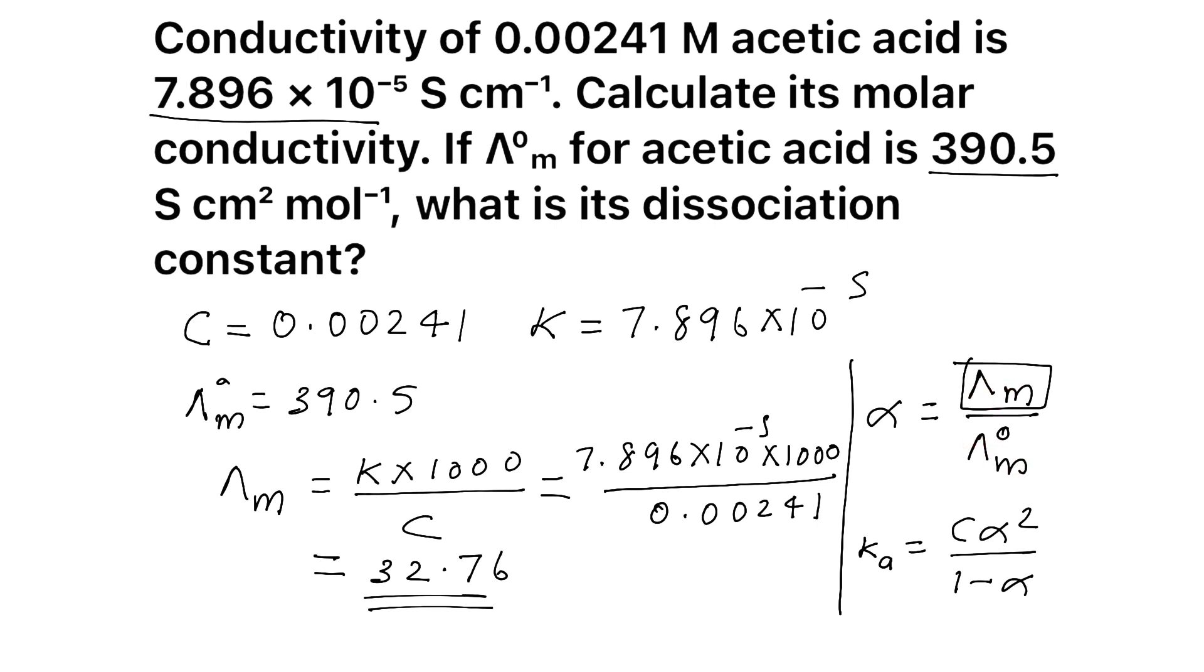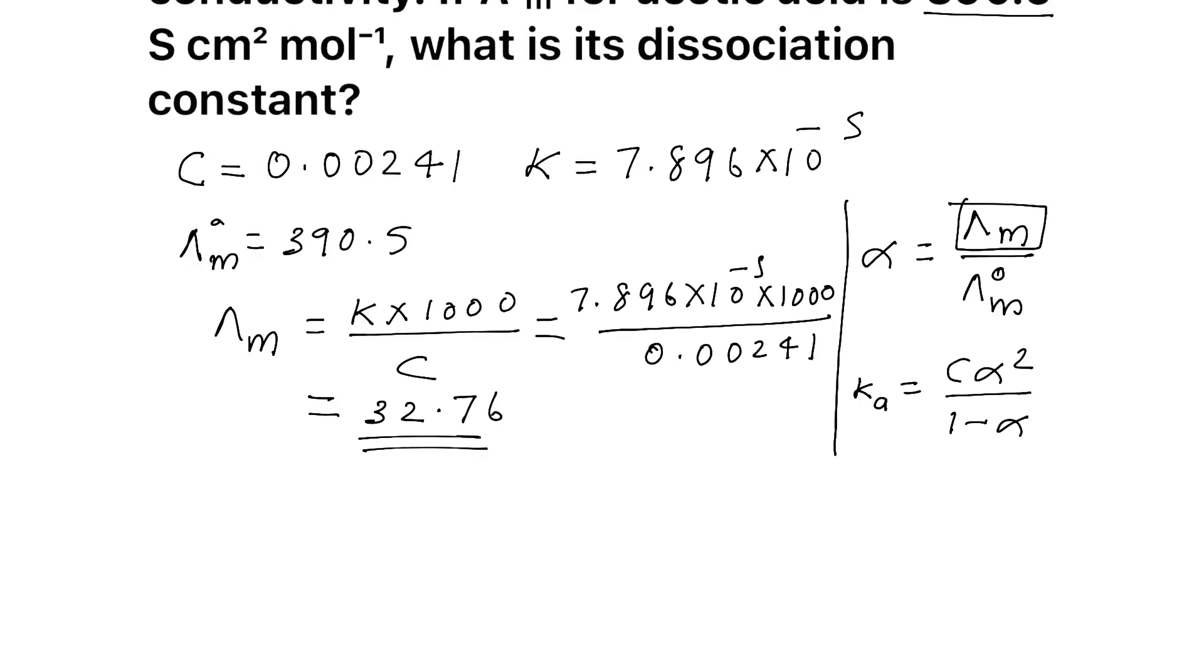Then, lambda M standard is given in the question. Divide it, you will get alpha. That is step number 2. So we can find alpha. Before that, what is the unit of molar conductivity? It is Siemens centimeter square mole inverse. Same unit.